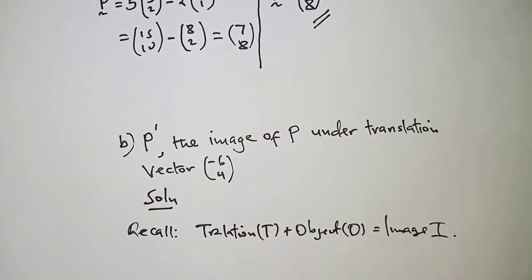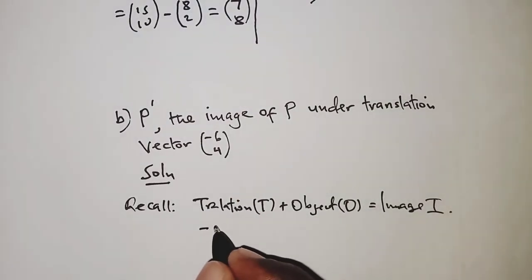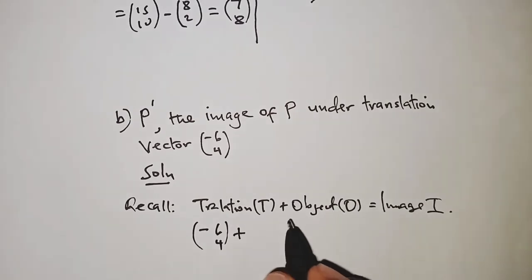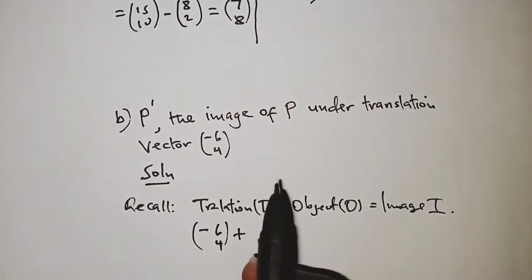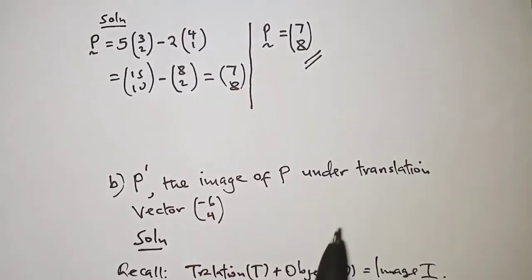So here, we have the translation as (-6, 4) plus the object point, which we already have for point P - it was right up here, (7, 8).